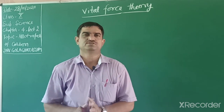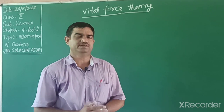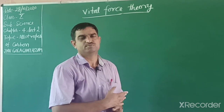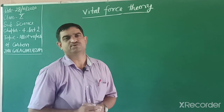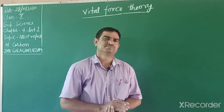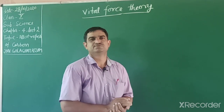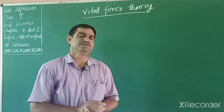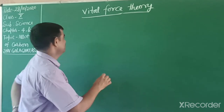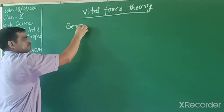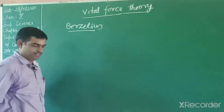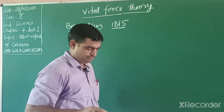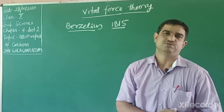Carbon makes special compounds due to two characteristics: one is catenation - self-linking property - and the other is tetravalency. Earlier there was a theory that these organic compounds could only be created by living things - we cannot prepare them in a laboratory. A Swedish chemist, Berzelius, proposed this theory known as the vital force theory in 1815, stating that organic compounds can only be produced from animals and plants.